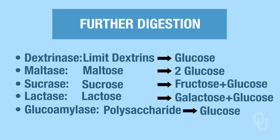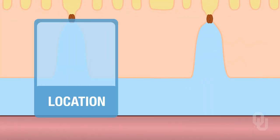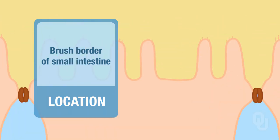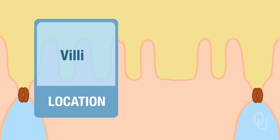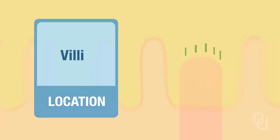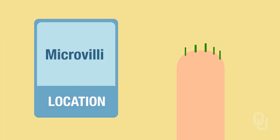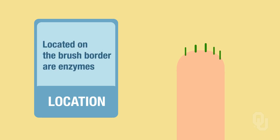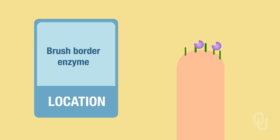Because of all of these enzymes, we wind up with all of these monosaccharides. Be sure you know which of these are monosaccharides, which are disaccharides, and which are polysaccharides. The locations for these enzymes are on the brush border of the small intestine. If you looked at the lining of the small intestine, you would see villi, and at the tip of the villi are the microvilli. Located on the brush border are enzymes called brush border enzymes. Many of the enzymes we've discussed, excluding salivary and pancreatic amylase, are brush border enzymes.